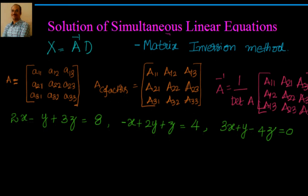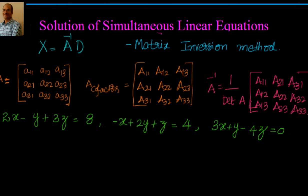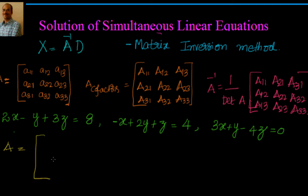As part of the matrix inversion method, our approach is to first find out A inverse, then multiply with D. Before that, we will identify what matrix A and D are. A is the coefficient matrix. So A equals: first row 2, minus 1, 3; second row minus 1, 2, 1; third row 3, 1, minus 4.